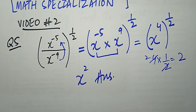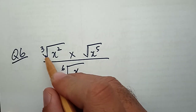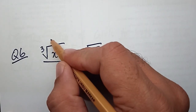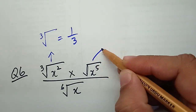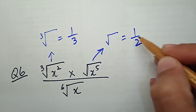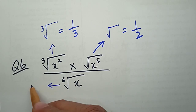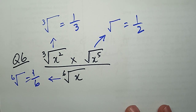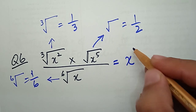Now I'm solving question number 6, which is also related to indices. This is the cube root of X squared. When I convert this radical form into index form, I can write the cube root as 1 upon 3 and the square root as 1 upon 2. I can write the square root of 6 as 1 upon 6 in index form. So first we will change all the radical forms into index form — X power 2 upon 3.